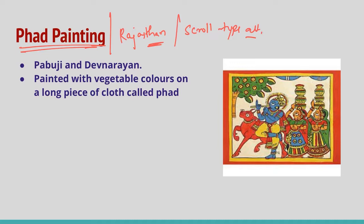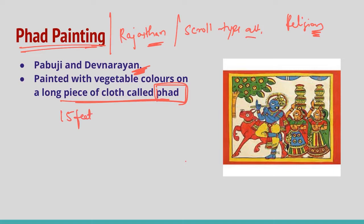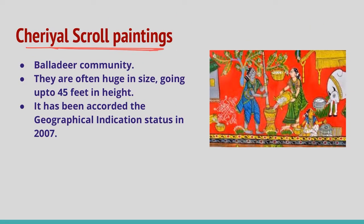Pad painting is religious in nature and comprises drawings of local deities. Babuji and Deva Narayan are painted with vegetable colors on a long piece of cloth — 15 to 30 feet long. The subjects have very large eyes and a round face. They are a pompous and joyful narrative depicting scenes of procession.